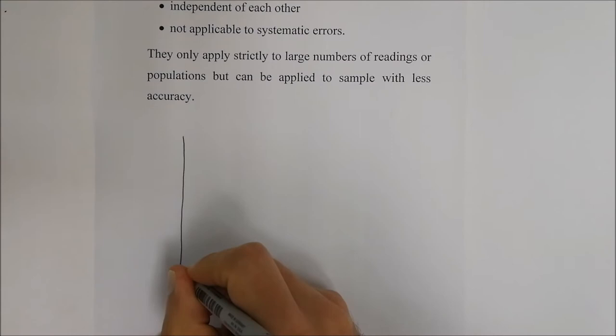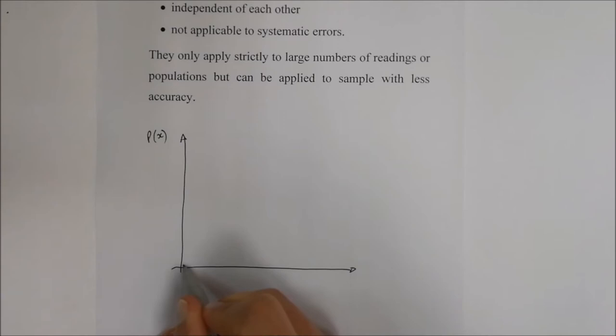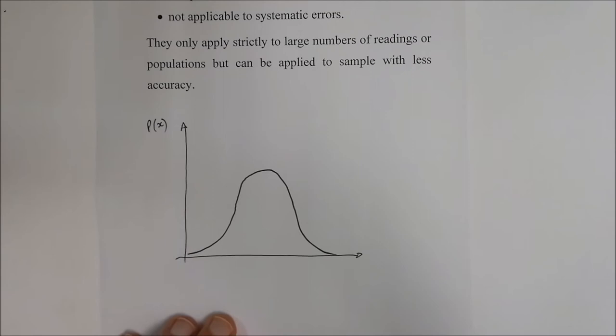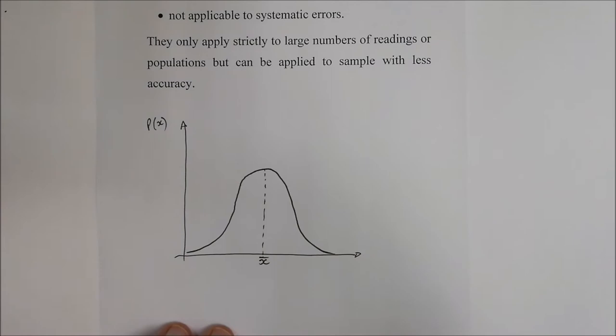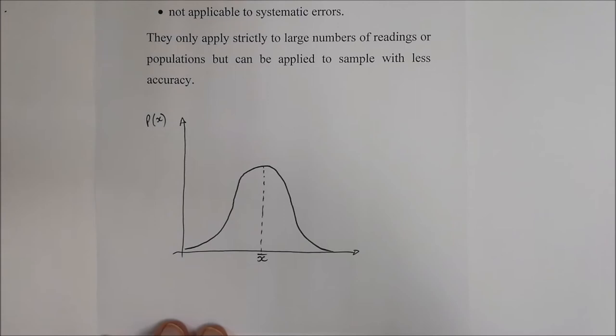The Gaussian distribution or normal distribution curve looks like the following. You have your axis, with p(x) on the vertical axis. It is a bell-shaped curve. The mean — represented as x̄ — sits at the center of the curve. If drawn correctly, it is a symmetrical curve, so the left-hand side and the right-hand side are mirror images of each other.